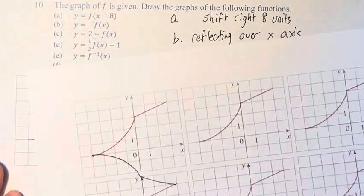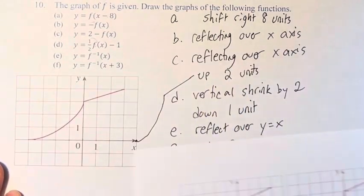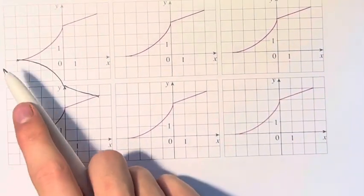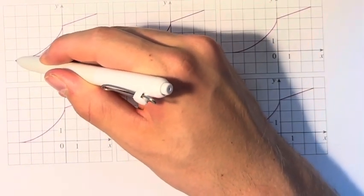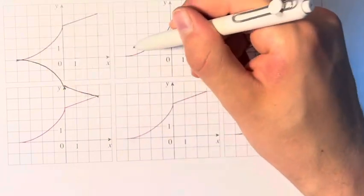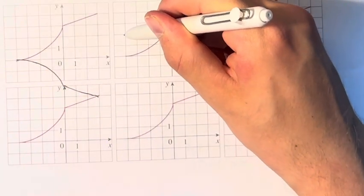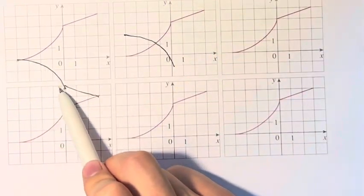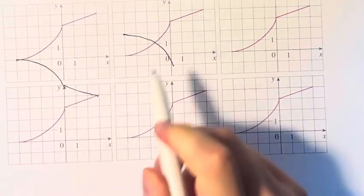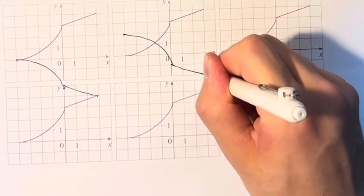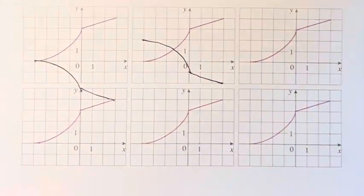For part C, we have to reflect over the x-axis, which we've done, and then move up 2 units. So we take this graph and move it up 2 units. This point at (-4, 0) becomes (-4, 2). Then we have that same curve down, and then over to the right 3, down 1. That's graph C.